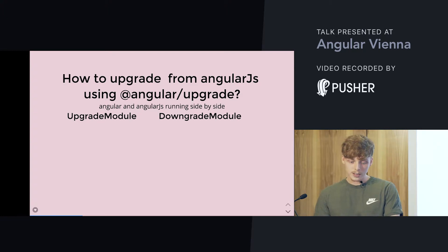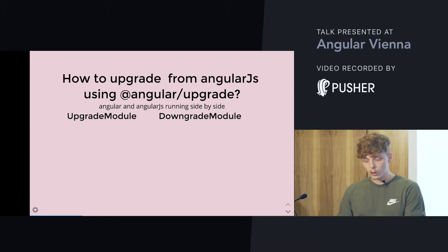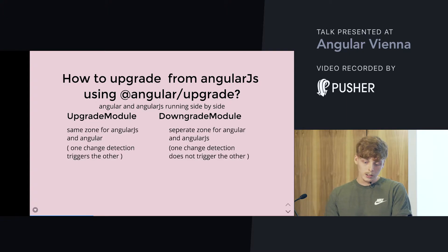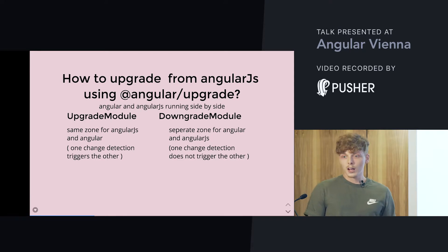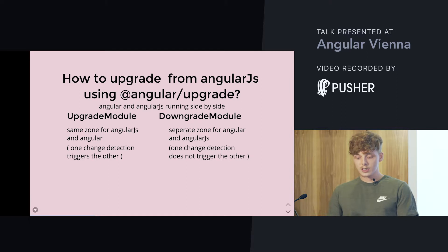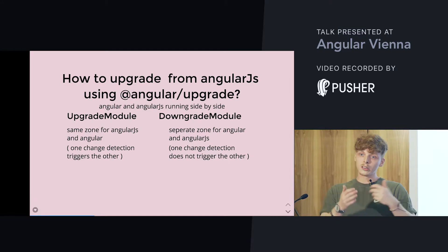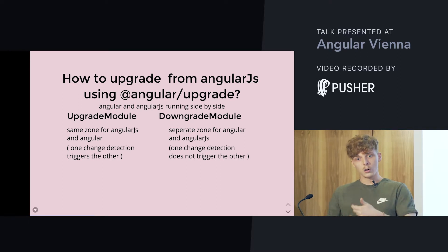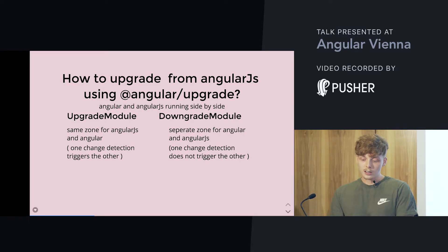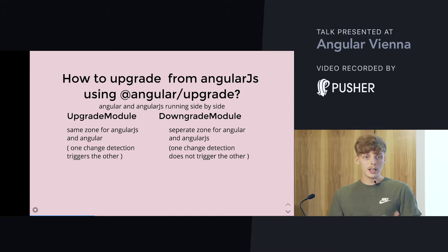There are two ways you can use it: upgrade module or downgrade module. The major difference is that in upgrade module, you have the same zone for AngularJS and Angular, so when change detection is triggered it fires in both. In downgrade module, you have separate zones for AngularJS and Angular.